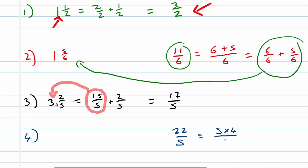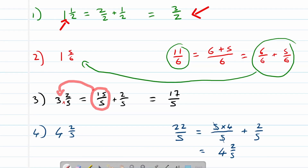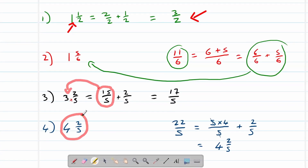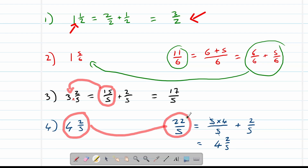So we have 5 times 4 over 5 plus 2 over 5. Here, 5 times 4 is 20, plus 2 equals 22. We know that 5 times 4 over 5 equals 4, because the two fives cancel out when you divide. So this is equal to 4 and 2 over 5. The mixed number 4 and 2 over 5 has the same value as the improper fraction 22 over 5.